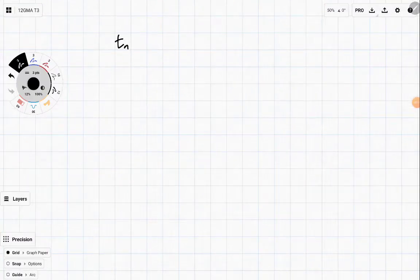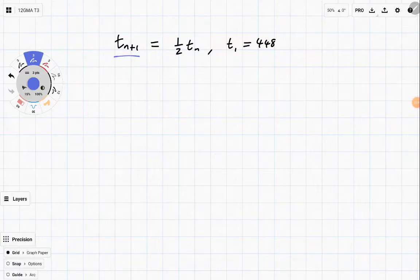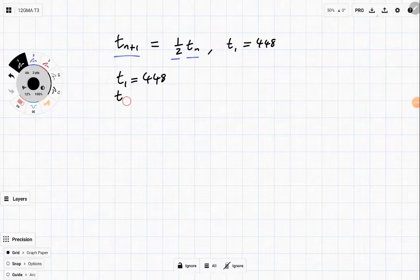What if instead we had t_{n+1} is equal to a half t_n, where t_1 is equal to 448? Well, this rule says that the next term is equal to half times the current term.